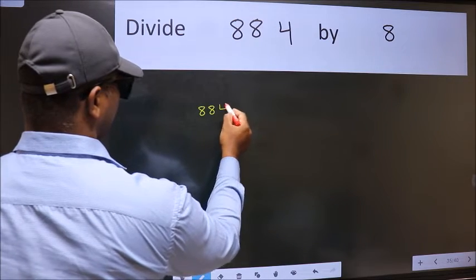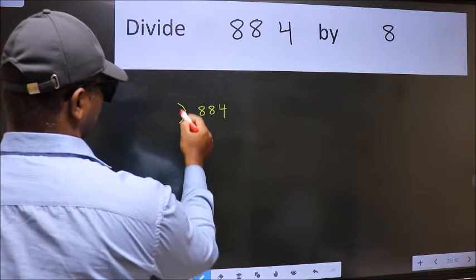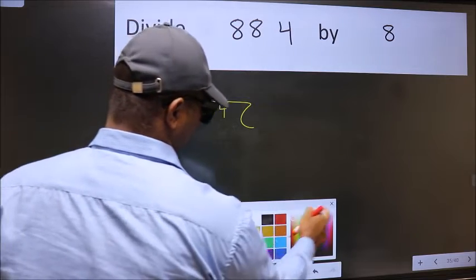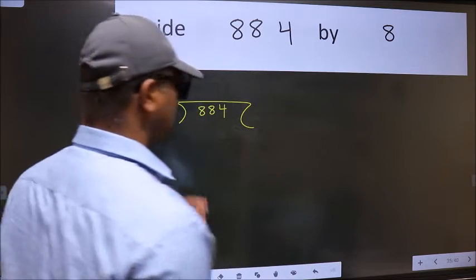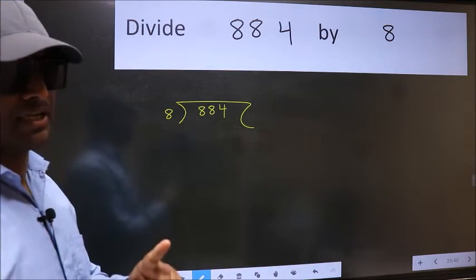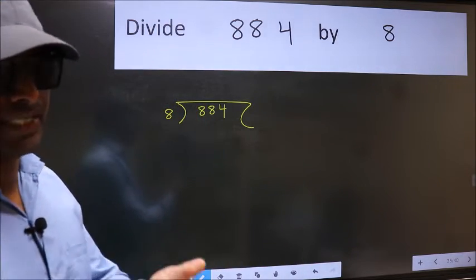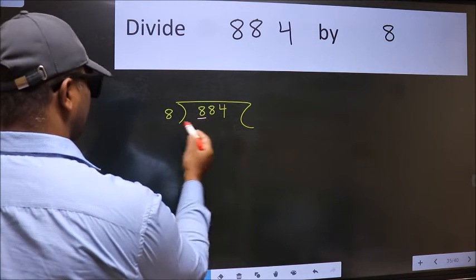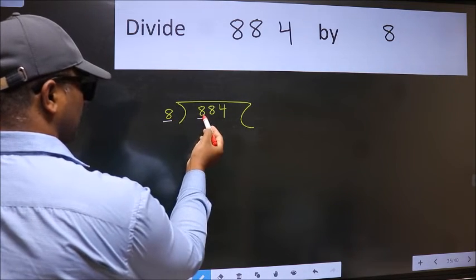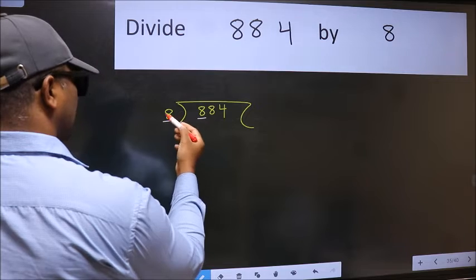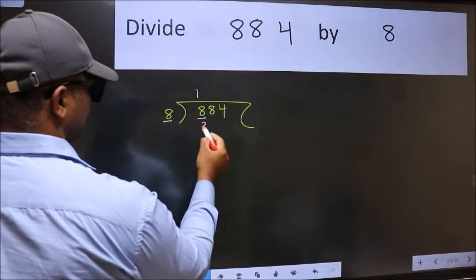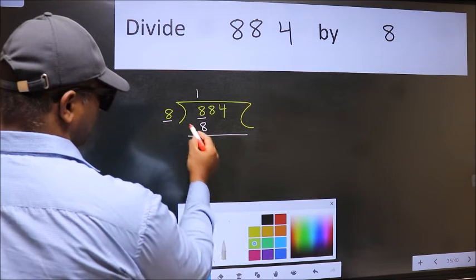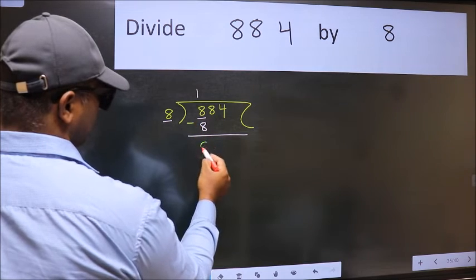884 here, 8 here. This is your step 1. Here we have 8 and here 8. When do we get 8 in the 8 table? 8 once is 8. Now we should subtract. We get 0.